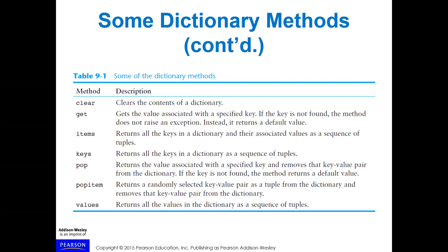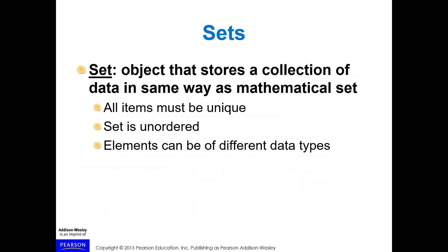Here's a summary of the dictionary methods we've covered: clear, get, items, keys, pop, popitem, and values. Now we're going to do an example of a dictionary — let me get through the remaining slides and then we'll switch over to the Jupyter notebook to try out the dictionary.